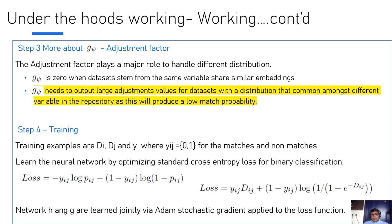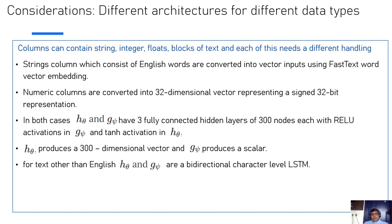Now let's move on to step four, which talks about training. Training examples are D_i, D_j, and y, where y_ij is zero or one for matches and non-matches. You learn the neural net by optimizing standard cross entropy loss for binary classification. Network H and G are learned jointly via Adam stochastic gradient applied to the loss function. H learns the embeddings. G is where we throw in the adjustment factors for various inefficiencies.